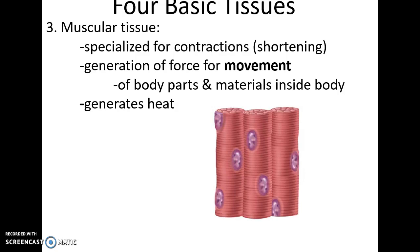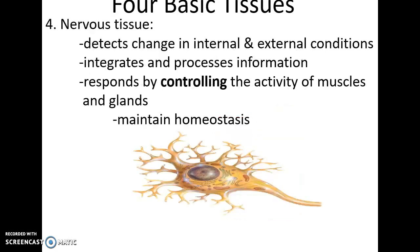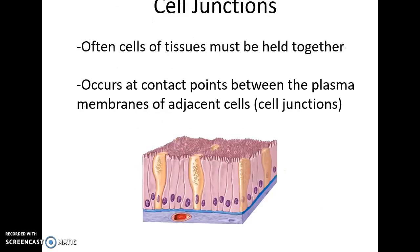Muscular tissue is specialized to produce contractions or shorten. This shortening generates force, allowing for movements of both body parts and materials inside the body. Muscle tissue can also generate heat. Nervous tissue detects changes in the internal and external environment, integrates and processes information to respond, regulating the activities of muscles and glands, and overall maintaining homeostasis.